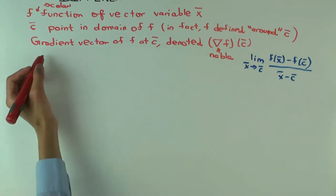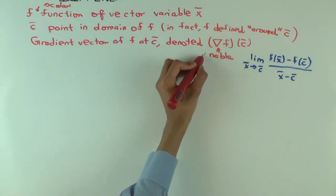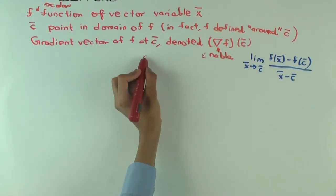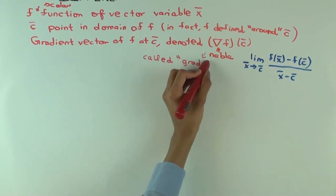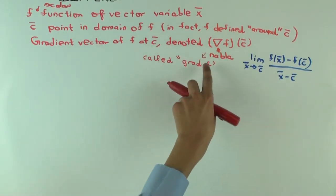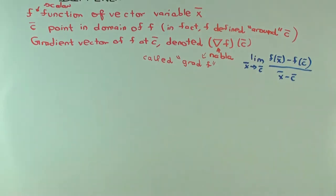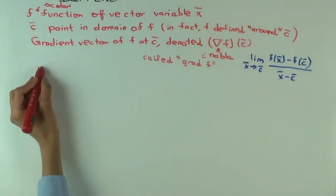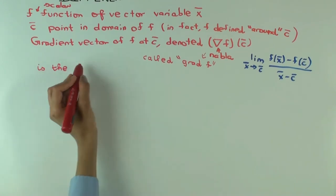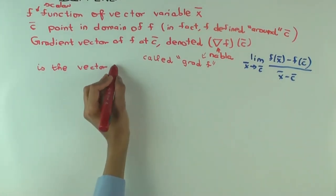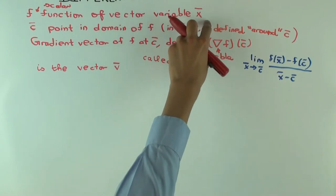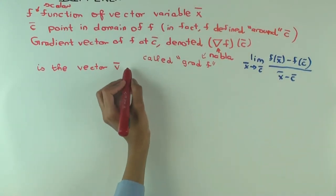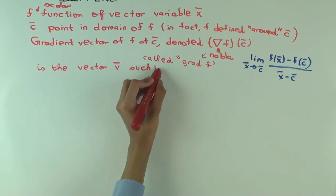So, the gradient of f, oh, by the way, this is called the gradient of f. So, it's sometimes called grad f. So, it's a gradient vector of f at c, but sometimes when people say it, quickly say grad f of c, you can also call it nabla f, that's a symbol. So, this is defined as the vector v. So, where is this vector living? It's living in the same vector space as x. So, if x is a vector with five coordinates, then v will also be a vector with five coordinates. It's a vector v, such that what holds?